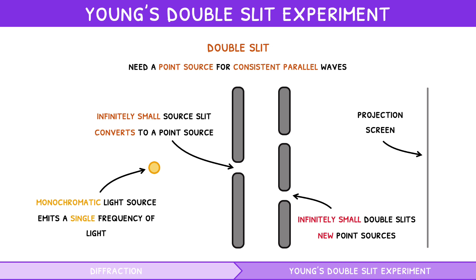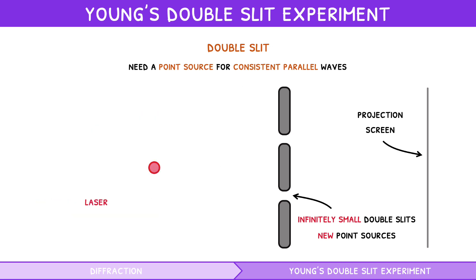An alternative setup could utilize a laser directly incident on the double slit, since they are naturally point sources, negating the need for a source slit.